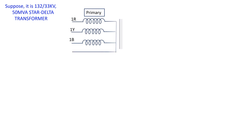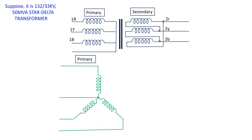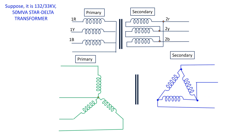As said earlier, the transformer on which testing will be conducted is a 132 by 33 kV unit. That means the primary windings are connected in star configuration and its secondary windings are in delta configuration, as shown in our picture.